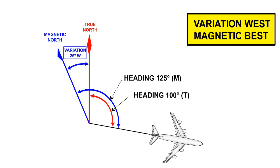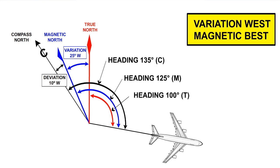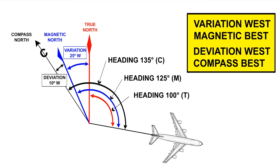Now, suppose we have determined the deviation on an easterly heading to be 10 degrees west. In other words, compass north is 10 degrees to the west of magnetic north. We can see that the angle between the heading and compass north is another 10 degrees, so the compass heading would be 135 degrees. The deviation is west and the compass heading is best. In other words, more than magnetic.